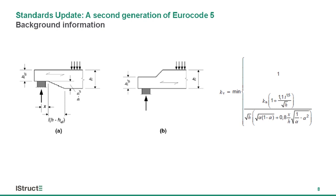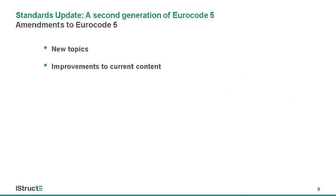In summary then, in trying to do these things, the important aspects we looked at were ease of use, reduction of nationally determined parameters (though not so much for EC5), and background documents. The specific amendments being looked at for Eurocode 5 fall into a broad categorization: new topics, and improvements to current topics.